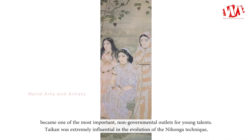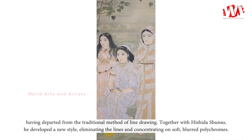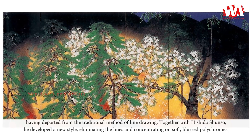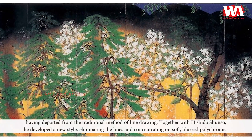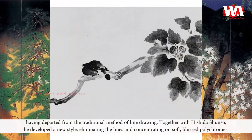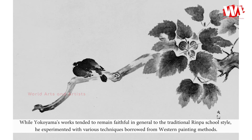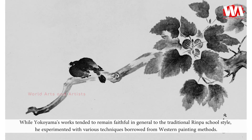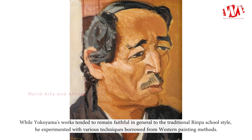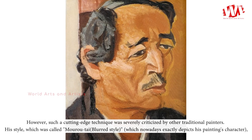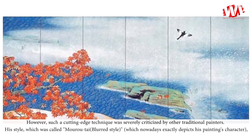Taikan was extremely influential in the evolution of the Nihonga technique, having departed from the traditional method of line drawing. Together with Ishida Shunso, he developed a new style eliminating lines and concentrating on soft blurred polychromes. While Yokoyama's efforts extended to remain faithful in general to the traditional Rinpa school style, he experimented with various techniques borrowed from Western painting methods.